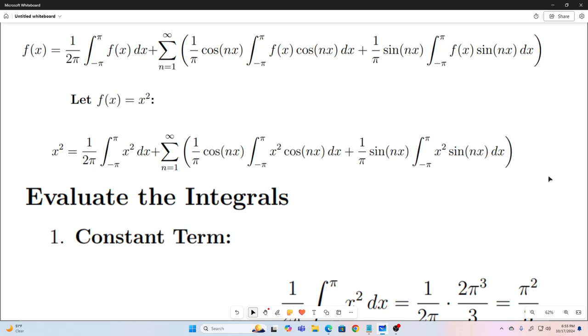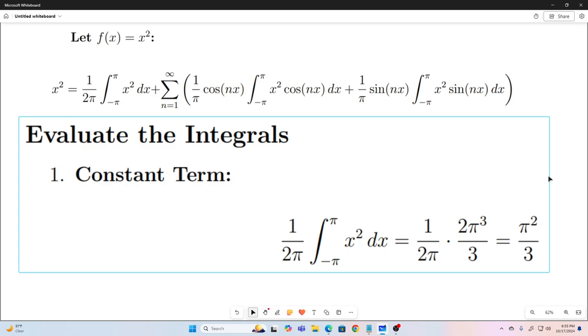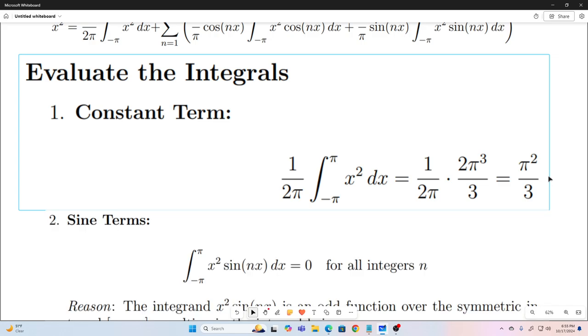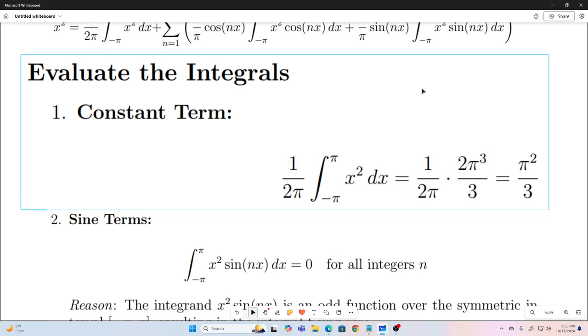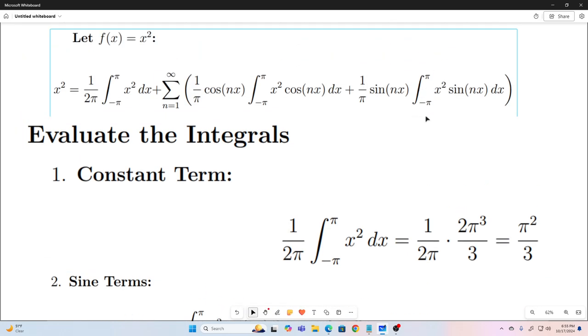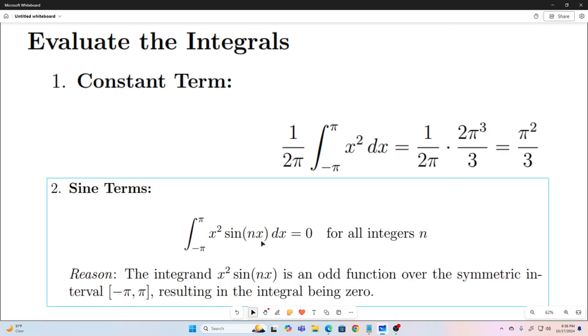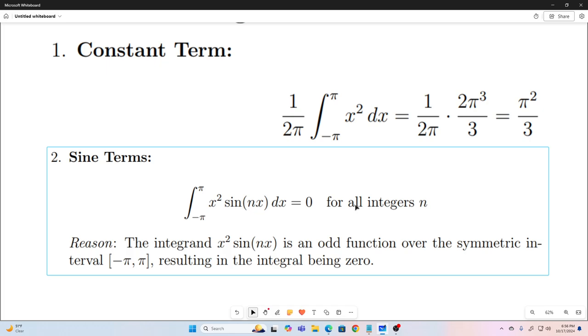So, after that, we're just going to evaluate the integrals in that. That first integral is going to evaluate to pi squared over 3. I'm not going to show that work. That's fairly trivial stuff. This integral, which you can see right here, that's going to evaluate to zero for all integers n. Well, actually, that's going to evaluate to zero no matter what. I don't know why I put for all integers n, because that's going to evaluate to zero for all continuous variables n.